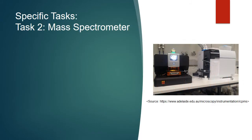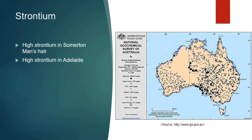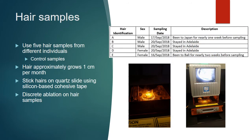The second task used a mass spectrometer. A mass spectrometer measures a sample as it gets ablated and picks up the different isotope signatures. The sample we used was a shaft of hair from the head. We measured strontium levels because previous studies found high strontium in some of the man's hair, and further research found high strontium in Adelaide. We used a quartz slide rather than a glass slide, as glass has impurities that would affect the results.